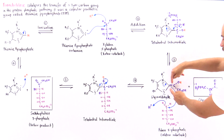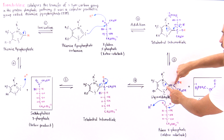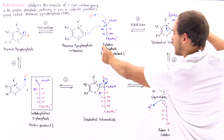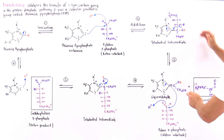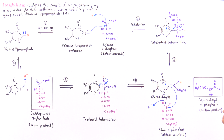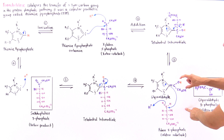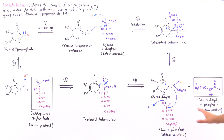We have the pi bond and sigma bond between the carbon from xylulose-5-phosphate and this carbon here. The three-carbon molecule — glyceraldehyde-3-phosphate — is kicked off, and the remaining two carbon atoms stay on this intermediate, which we call the activated glycoaldehyde.